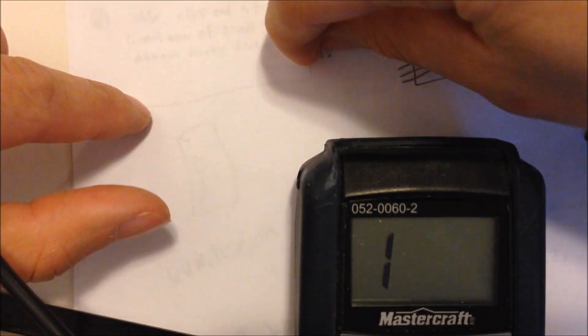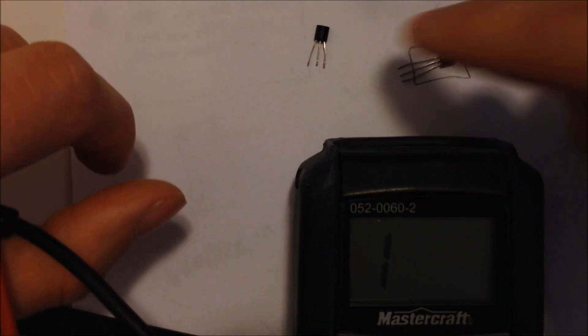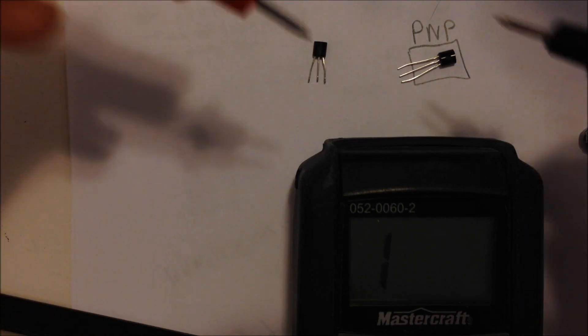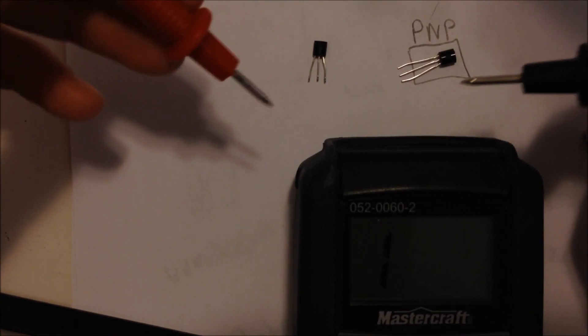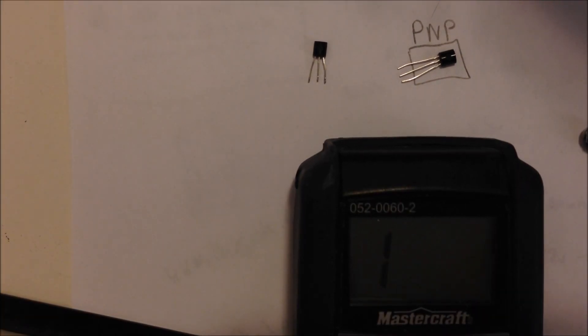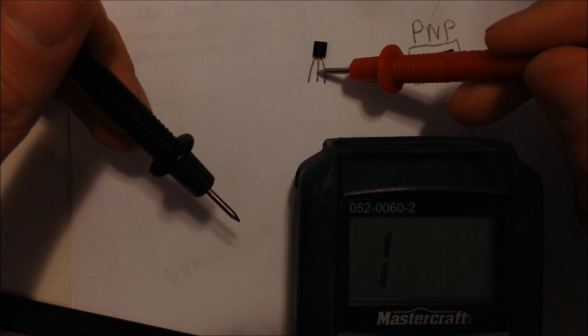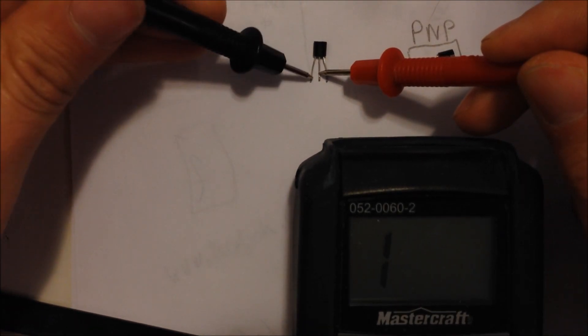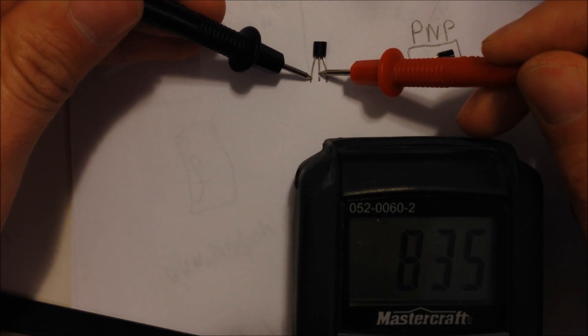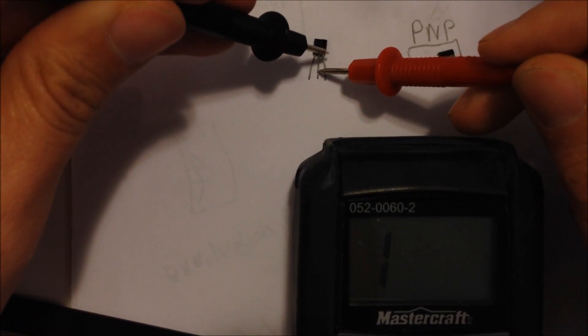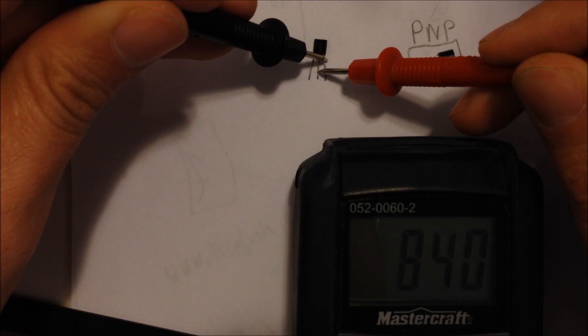So now we want to test this one. This one's going to be an NPN because I only have the two types here. But in order to prove that, what we'll do is take the multimeter leads again and put the positive lead on the base now and the negative lead either on the emitter or the collector. And you'll notice we have a reading here. And likewise, if we switch the negative lead over to the other pin here, we get a reading.